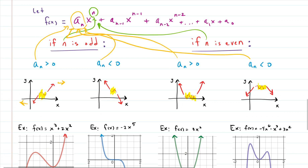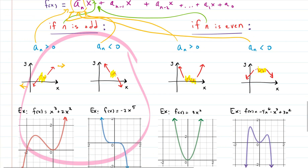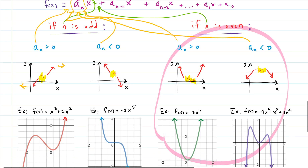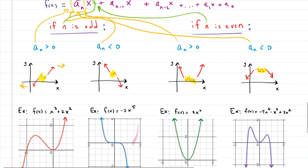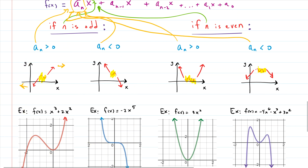We first look at the highest power. If it's odd, we're in the left category; if it's even, we're in the right category. Within each category we then check whether the leading coefficient is positive or negative. That gives us our four options, and we can go straight to what the graphs look like in each case.